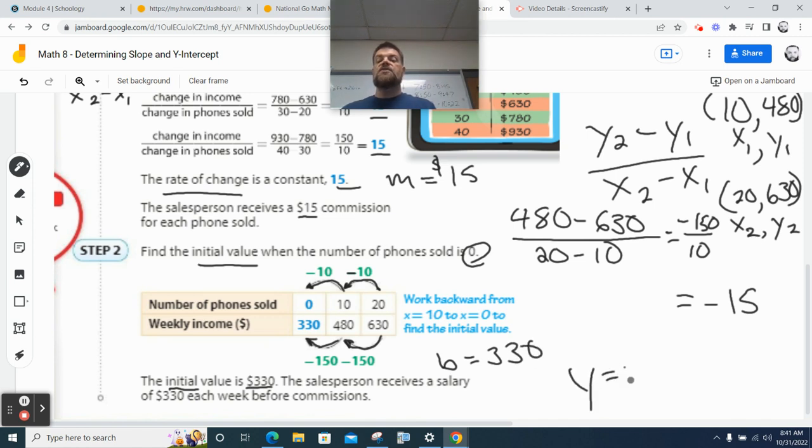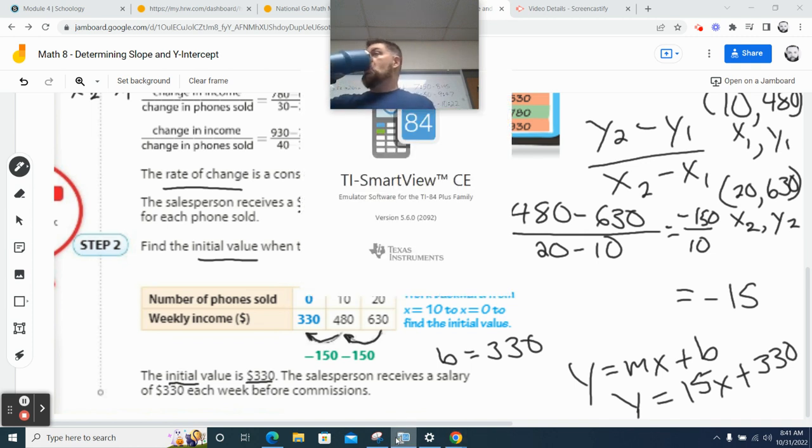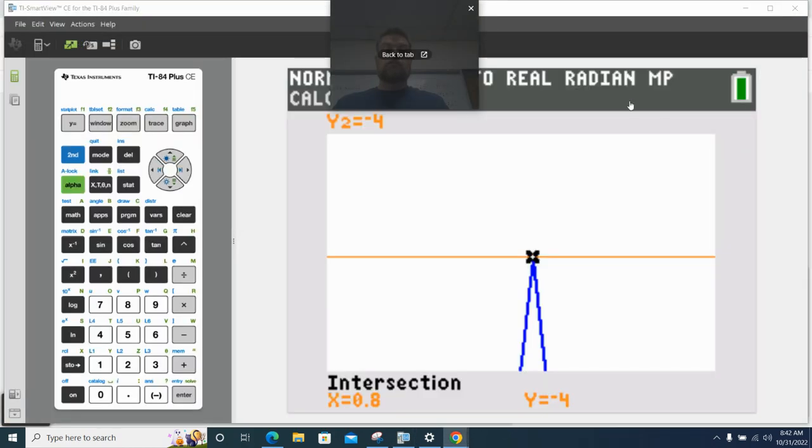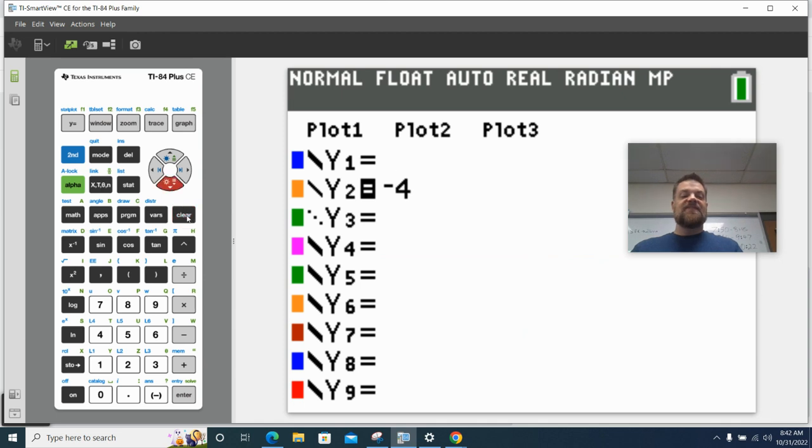So y equals mx plus b. If I needed the equation, it would be y equals, what's m? Yeah, but what's the actual value for this problem? 15x plus what's b? $330. So that's the equation. Now, what I want you to do, turn your calculators on. Oh, we got to hurry. The bell's going to ring in a second. Now, we're going to get some arm wrestle. Well, maybe we can arm wrestle later. Let's plug that in.